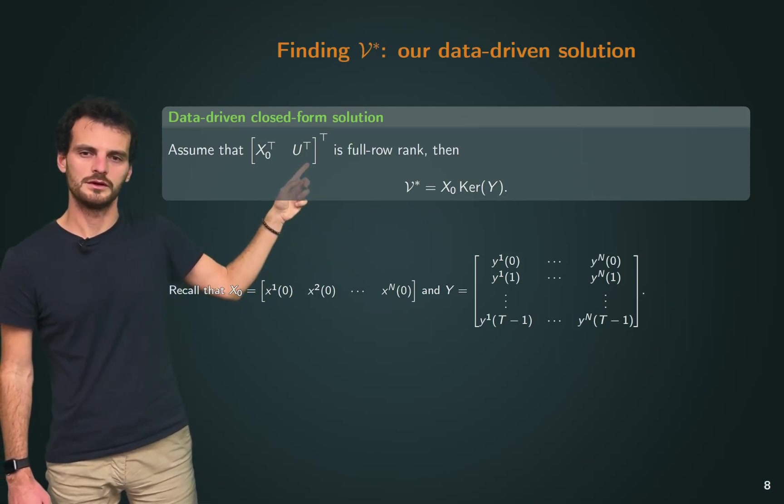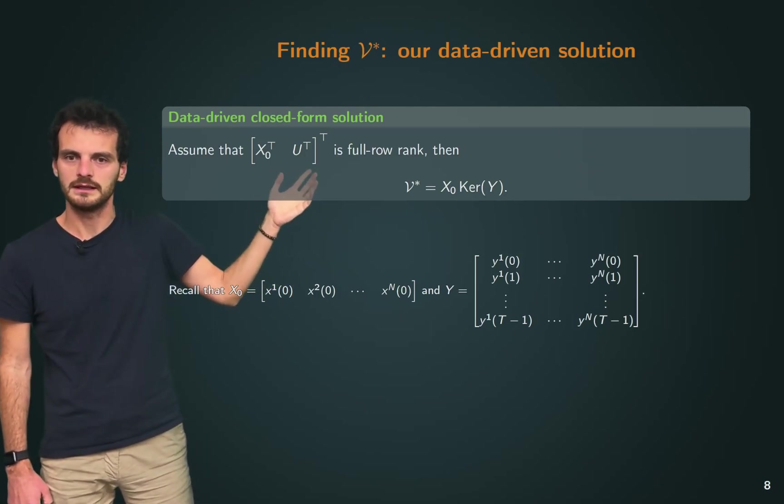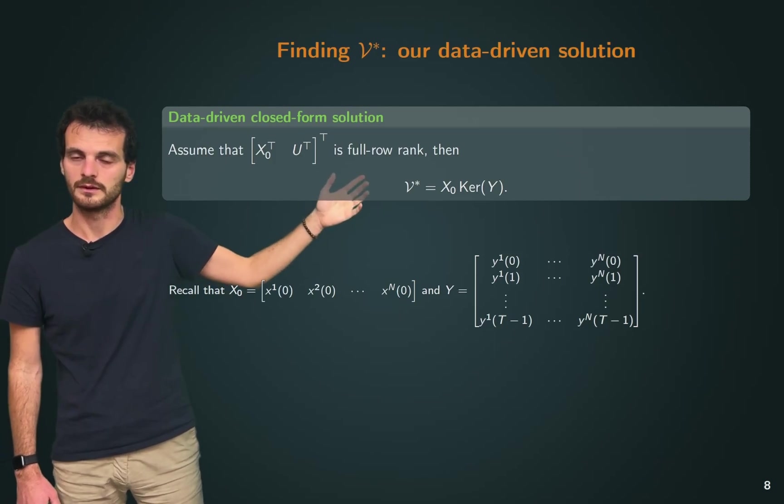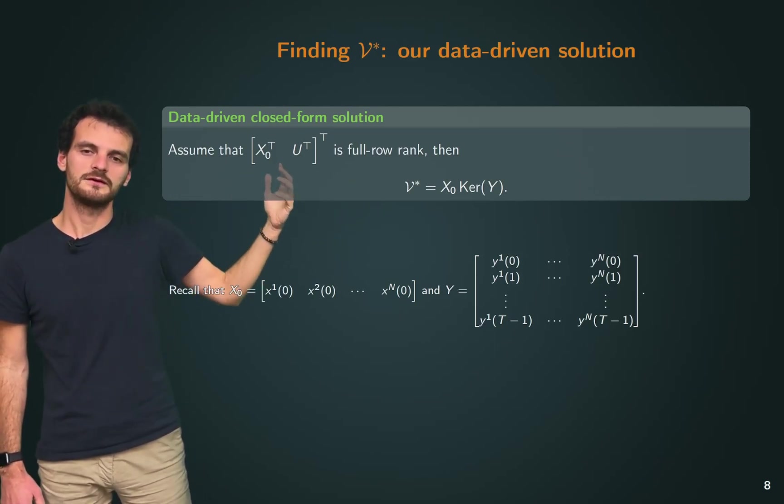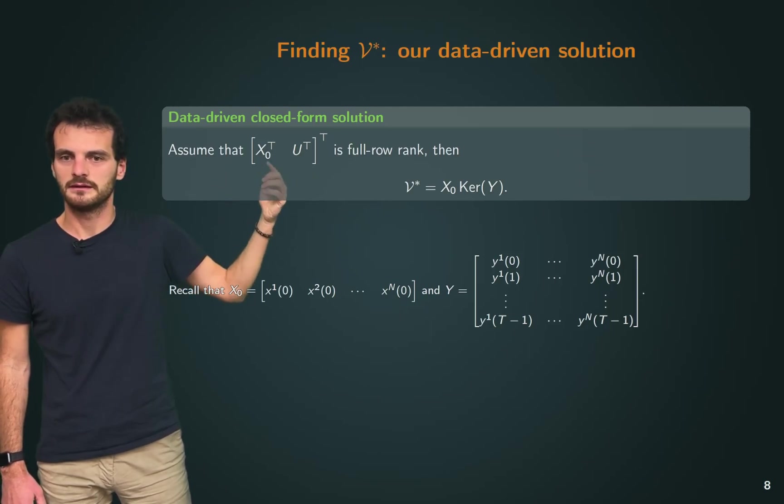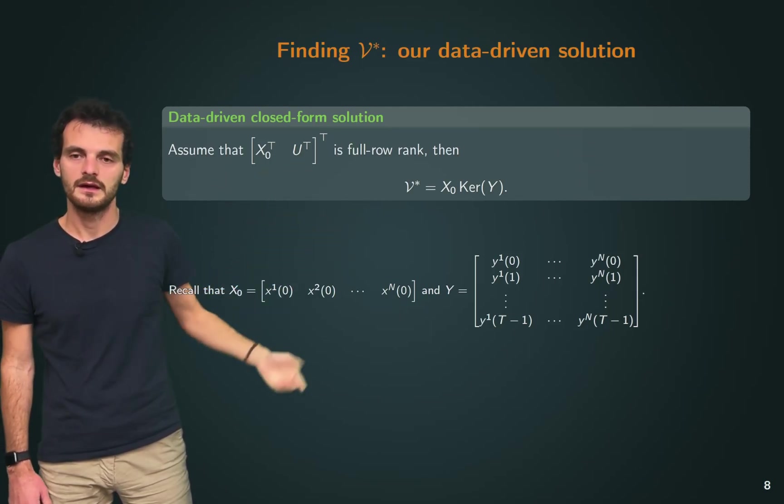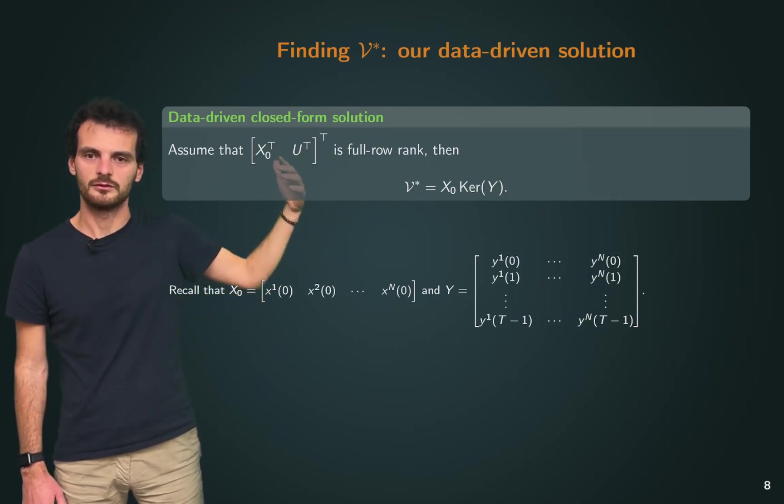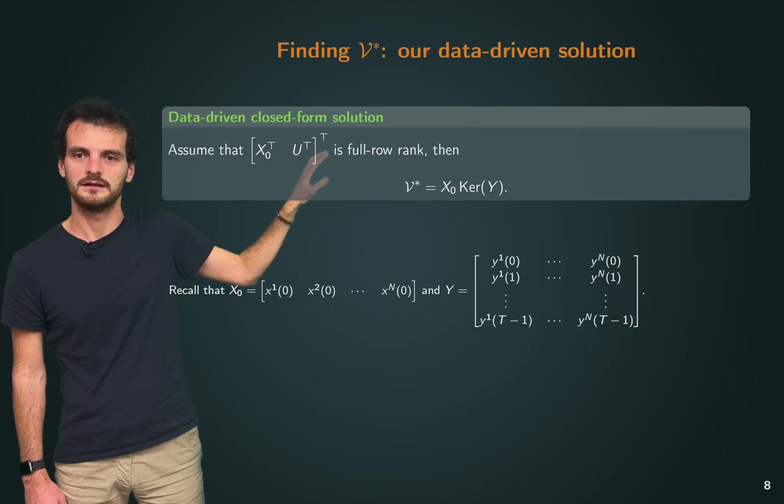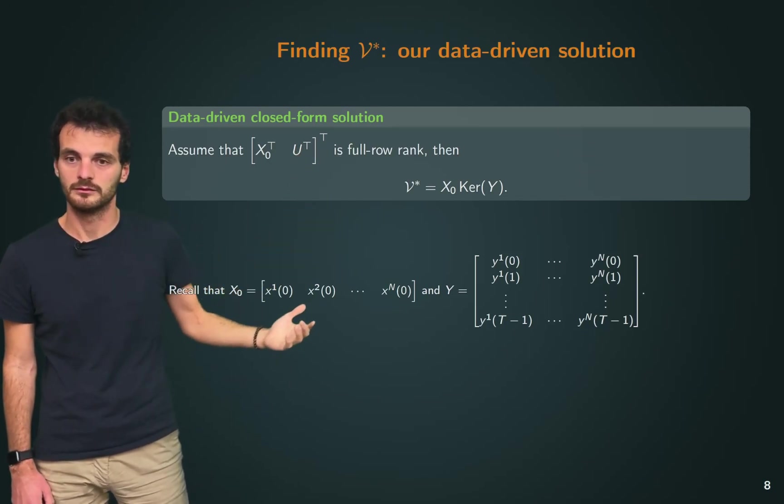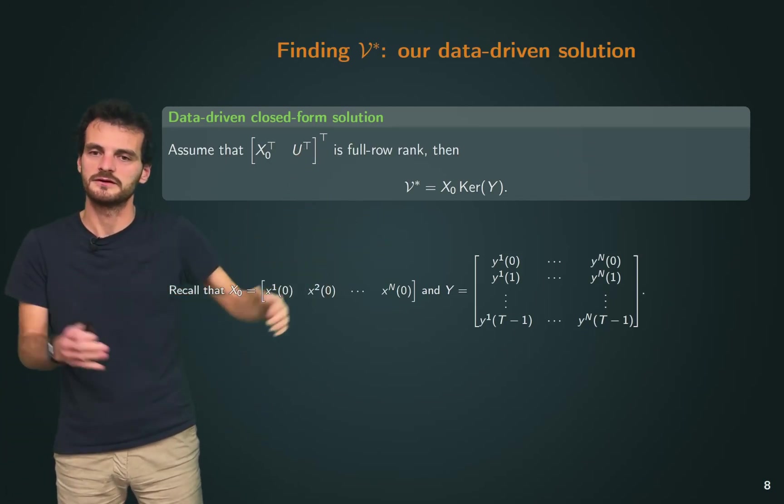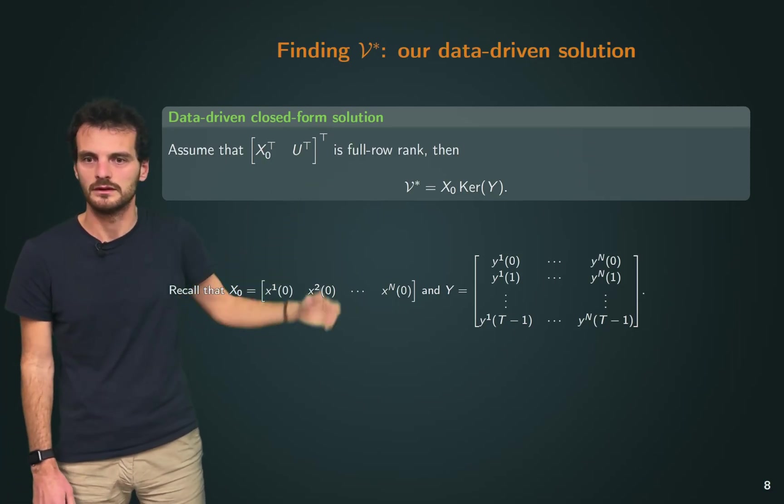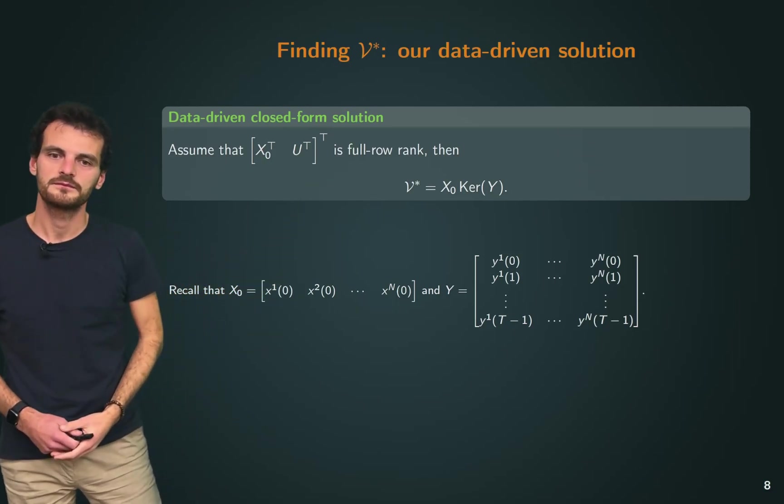Now, you might think we're using U here. So, it's true, you need U to be full row rank. However, this is easy to verify, for example, when data is generated through random initial conditions and inputs, or when data is easy enough for which you can assume that U is, in fact, full row rank. So, you have a big number of experiments. This improbability will be satisfied.